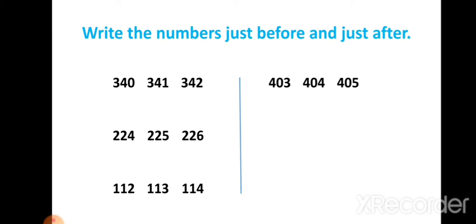We will see the next example. Here we have to write just before number of 146. Which number comes here? That is 145. So 145 is the before number of 146. And the after number which comes is 147.